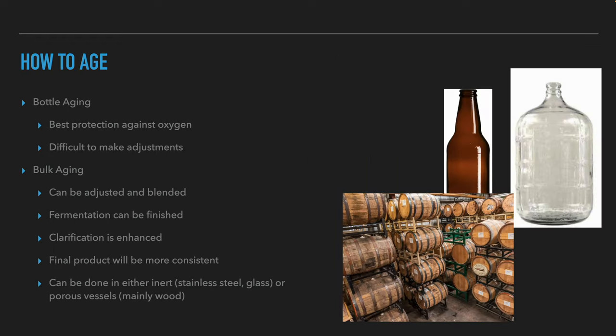Beer can be aged in the bottle, which offers good protection against oxygen, but makes it difficult for brewers to make adjustments. The second method is to age the whole batch together, allowing the brewers to easily balance the beer after aging — fermentation can finish, the beer becomes clearer, and the final product will be much more consistent from bottle to bottle. This can be done in inert vessels such as stainless steel or glass, or in semi-permeable containers, mainly wood.